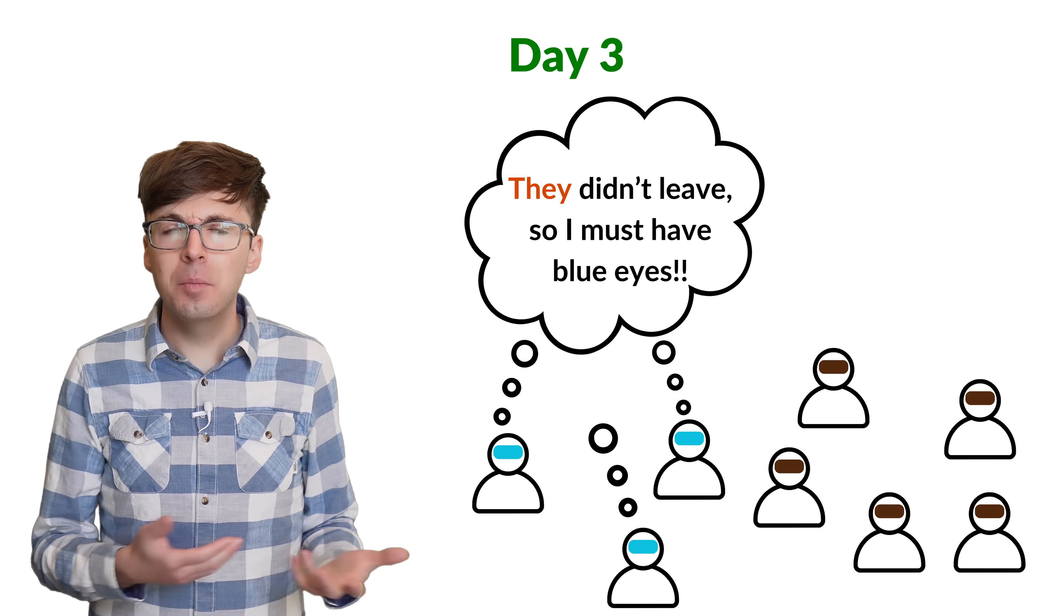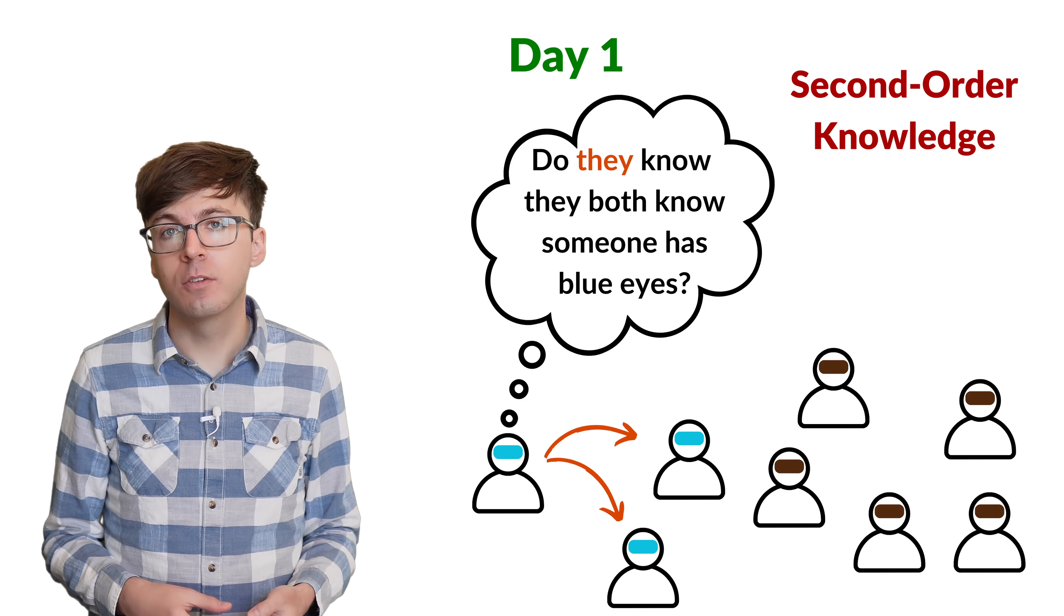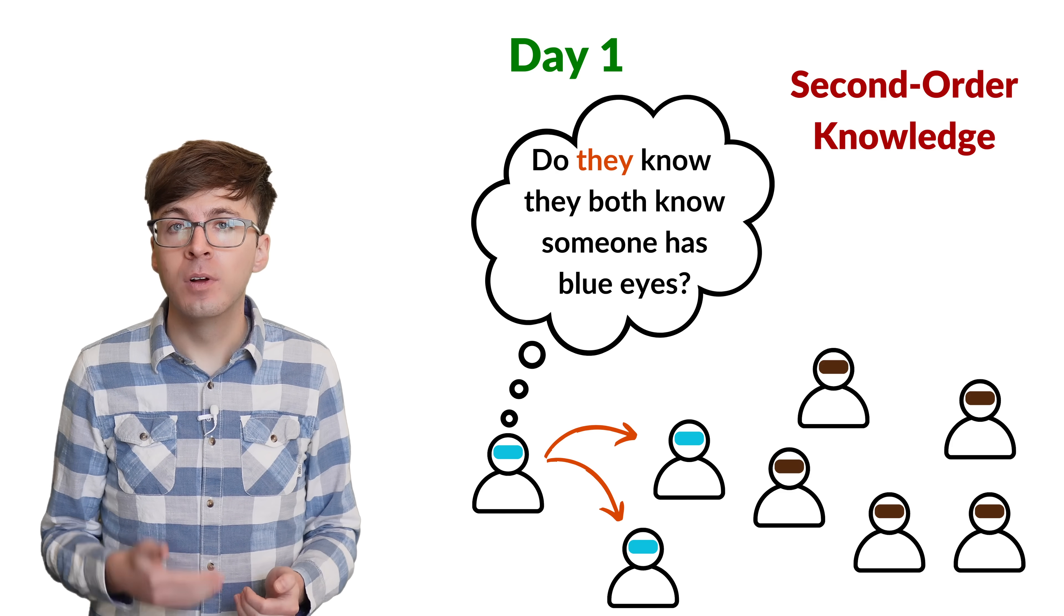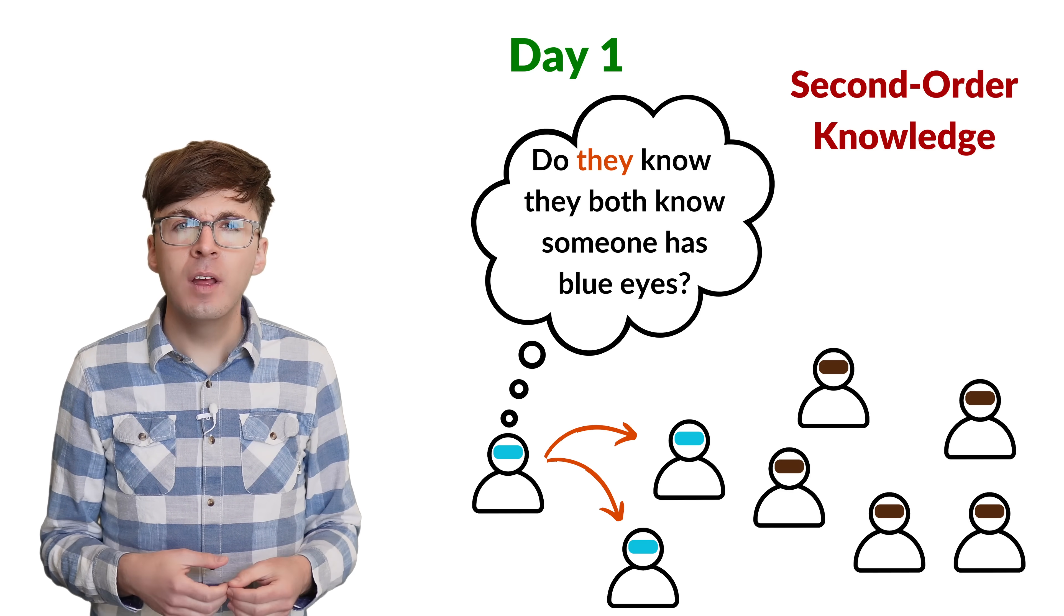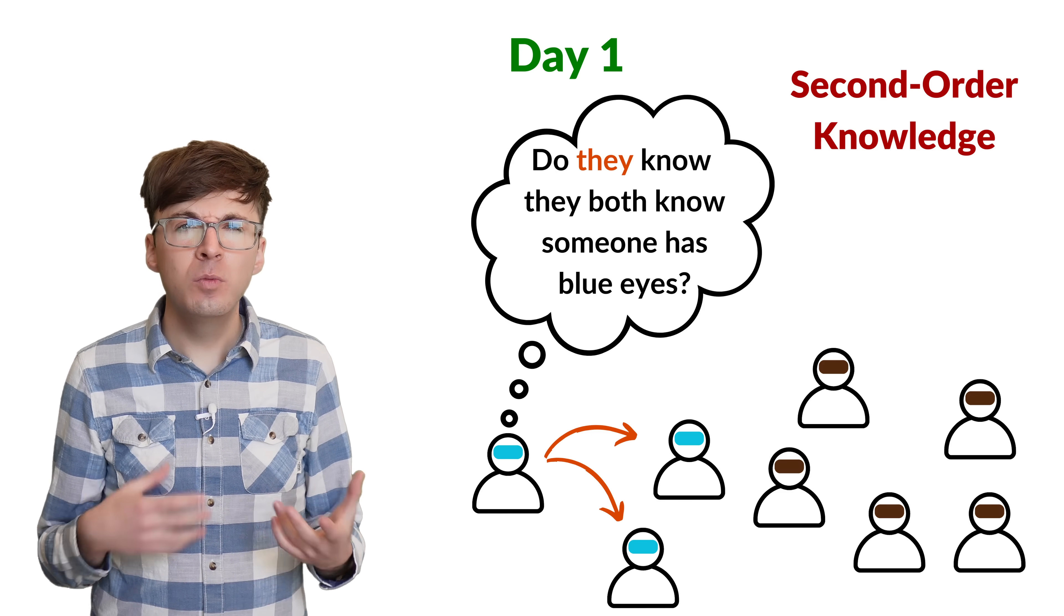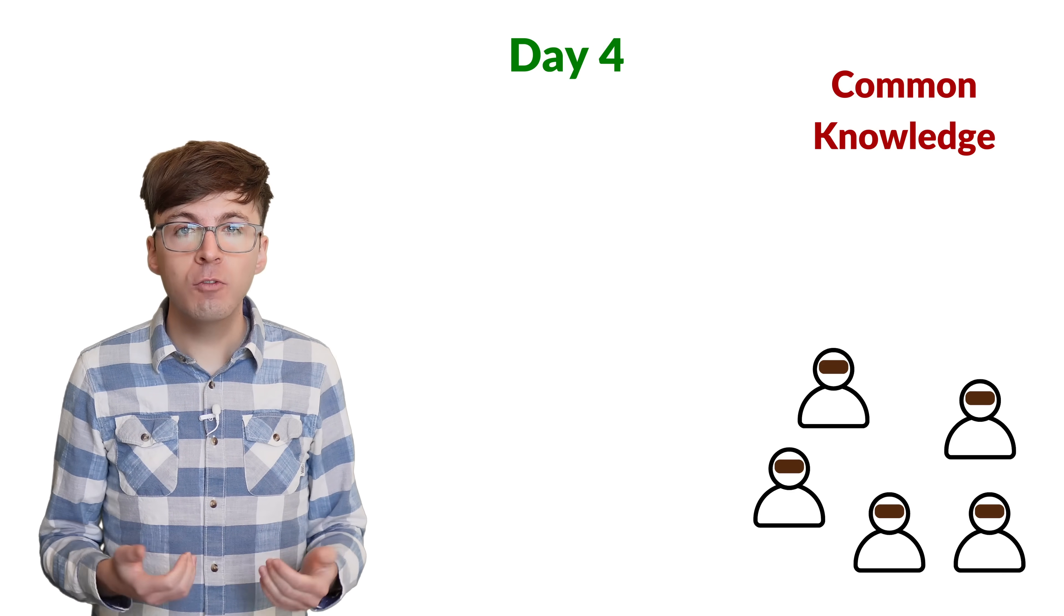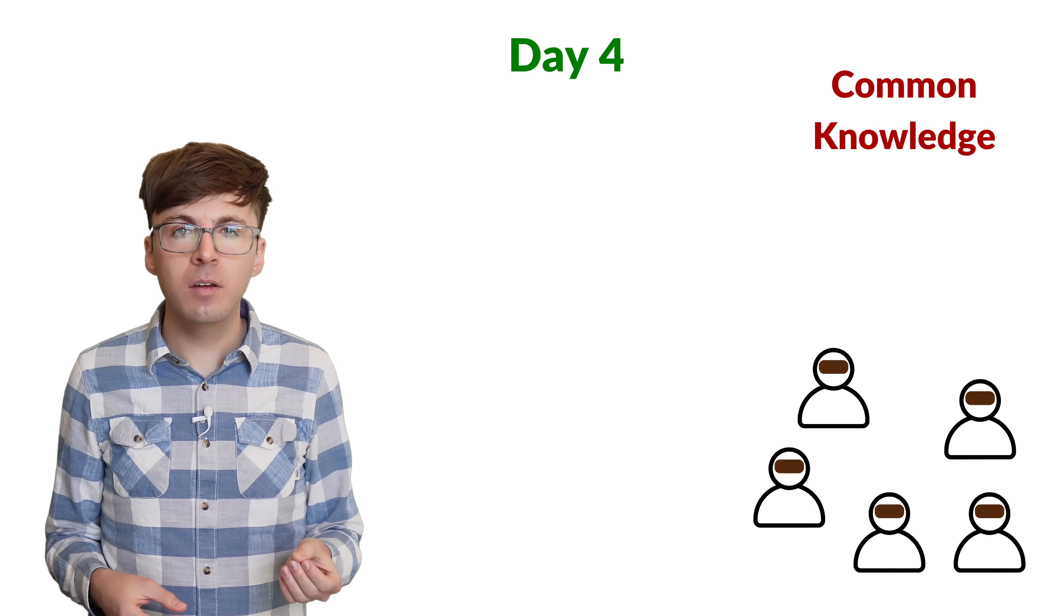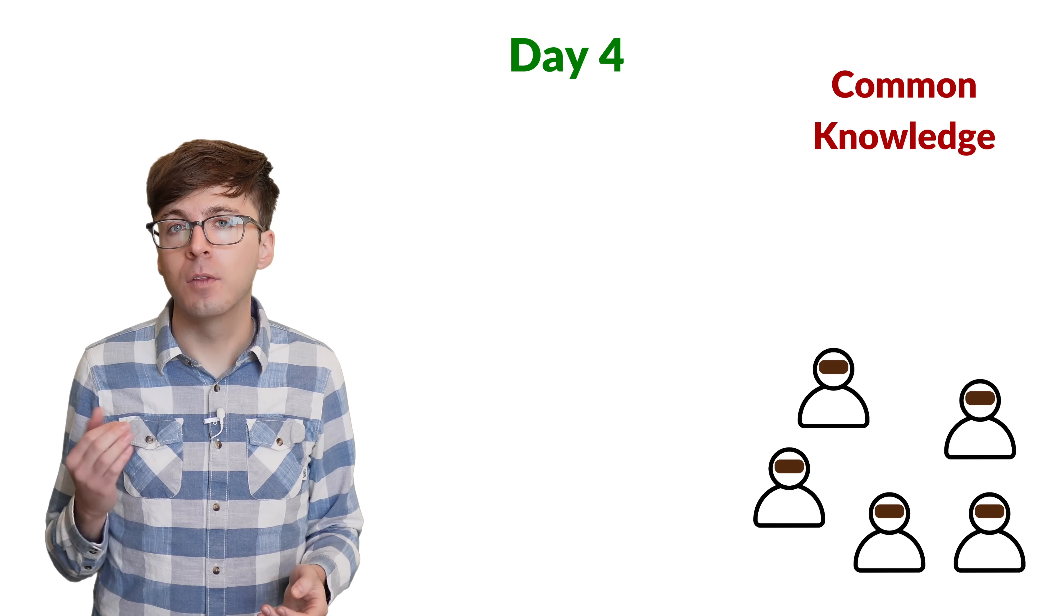What happened here? At the beginning, the fact that there was a blue eyed islander was second order knowledge. Imagine you're a blue eyed person. You know that each of the other blue eyed people sees someone else with blue eyes. However, you don't know that they also see you as the third blue eyed person. So you don't know that the other two blue eyed people have the same knowledge that you do. Once the stranger makes the statement, this becomes common knowledge. This is a bit subtle, but it shows the difference in knowledge between the people with brown eyes and those with blue eyes.